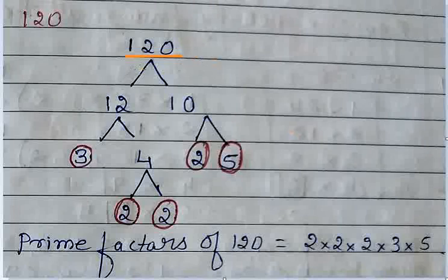First we will express 120 into product of any two numbers. So in my mind it is coming as 12 into 10 because 12 tens are 120. So we express this into number 12 and number 10. We know that both the numbers are composite numbers.